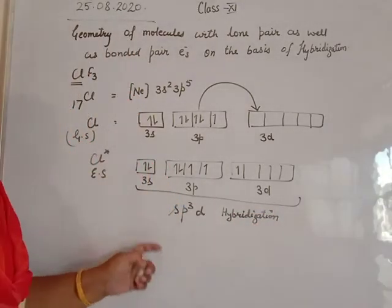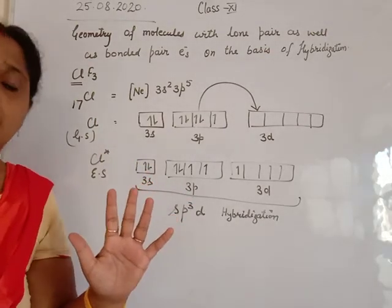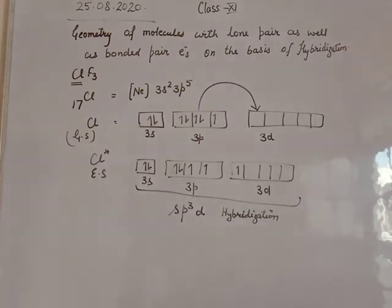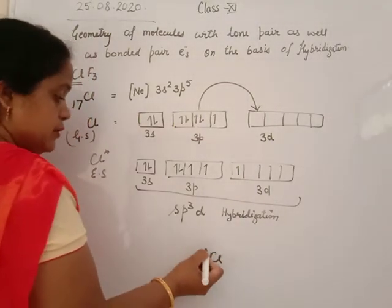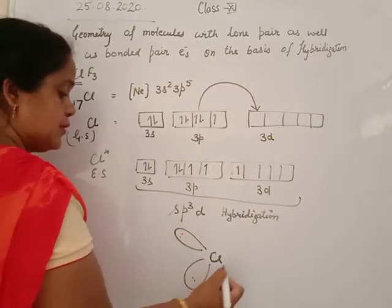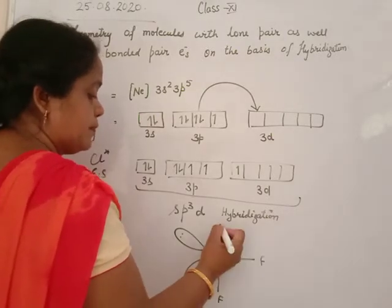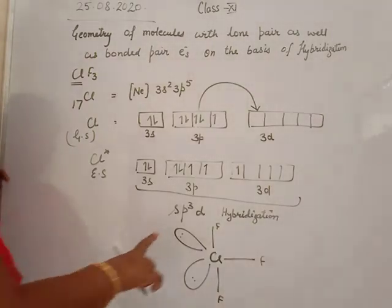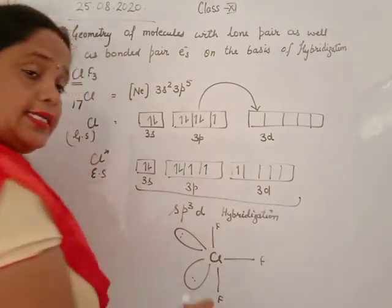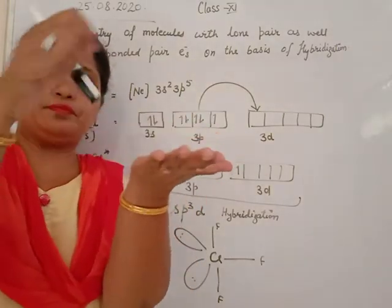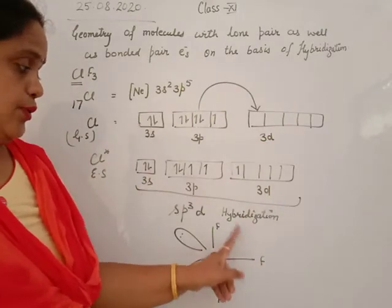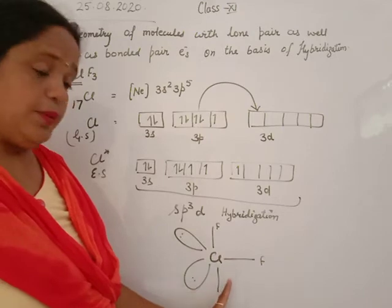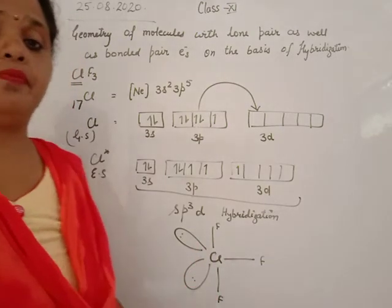On this basis, sp3d hybridization gives 5 electron pairs. Out of 5, there are 3 bond pairs and 2 lone pairs. According to VSEPR theory, this gives a T-shape geometry. The 2 lone pairs occupy equatorial positions, while the 3 fluorines occupy 1 equatorial and 2 axial positions. The positions above and below the plane are axial, and those in the plane are equatorial. The axial bond angle is approximately 180 degrees, but not exactly, due to lone pair–lone pair repulsion.